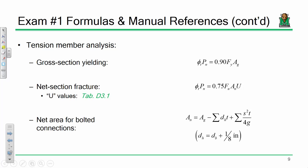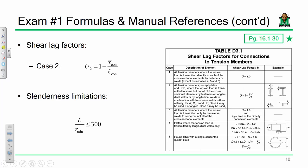Tension members. Gross section yielding, 0.9 FY times AG. Net section fracture, 0.75 FU times the net area times U. Your net area for your bolted connections is the gross area minus the area loss due to the presence of bolt holes plus any necessary stagger factors. Remember, the hole diameter is the bolt diameter plus an eighth of an inch. Shear lag factors. Page 16-1-30, star that, have that in your manual. The most common case is case 2, 1 minus the connection eccentricity divided by the connection length. Other cases are found in the table. Don't forget L over R is less than or equal to 300. It's R min. So that can change depending upon if you're looking at an angle or a T or whatever.